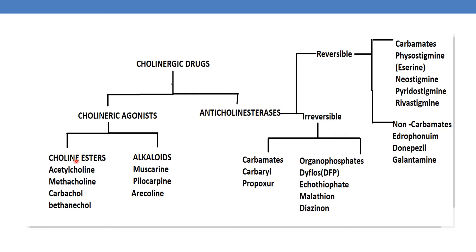Examples of choline esters are acetylcholine, methacholine, carbachol, and bethanechol. Coming to examples of alkaloids which come under cholinergic agonists: muscarine, pilocarpine, and arecoline.